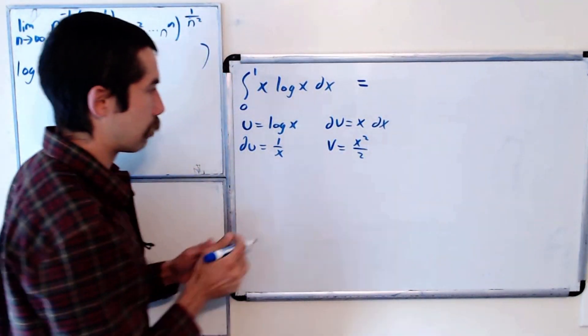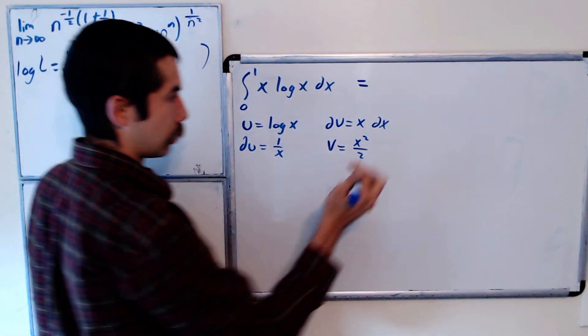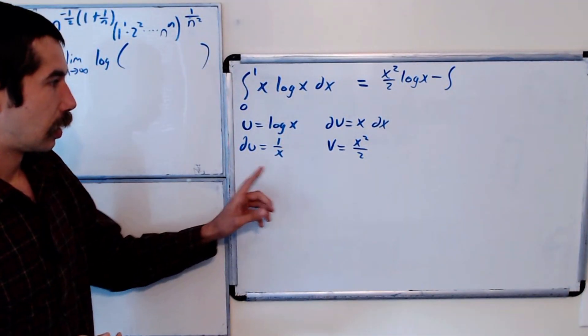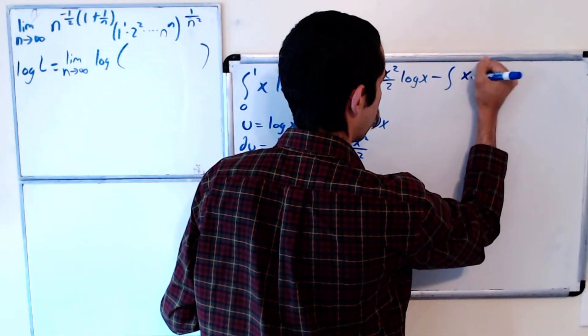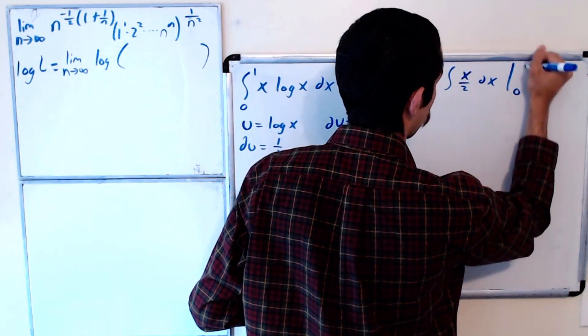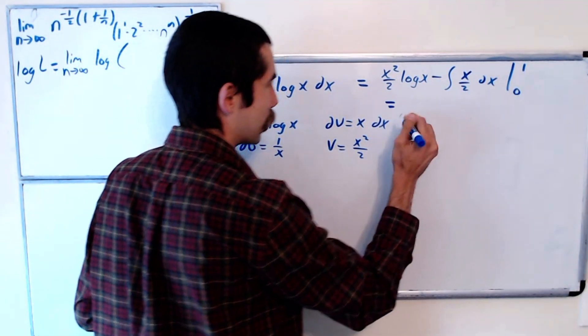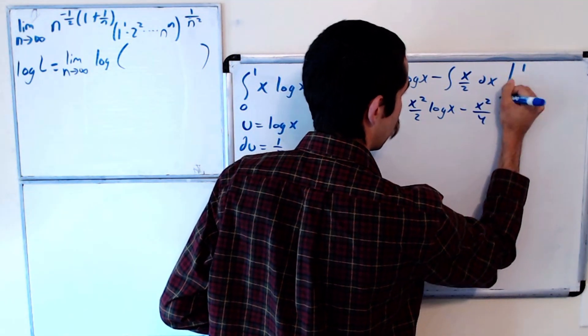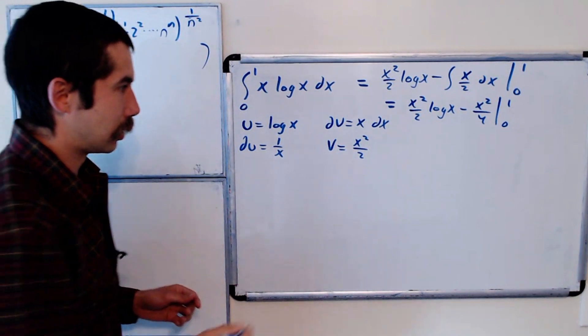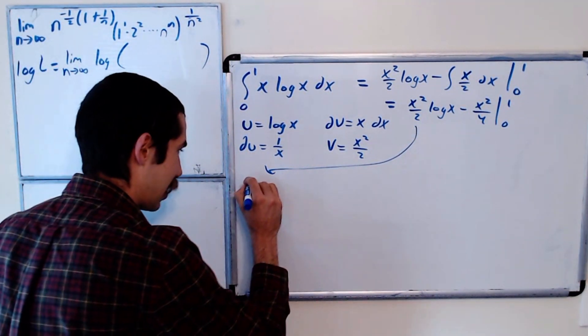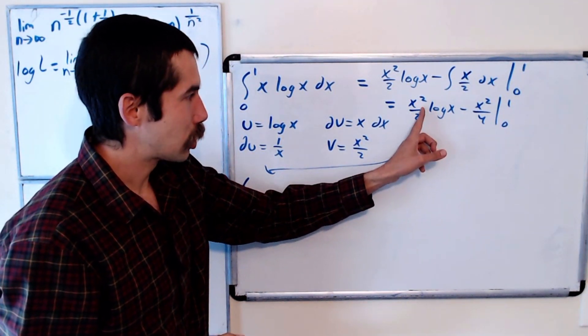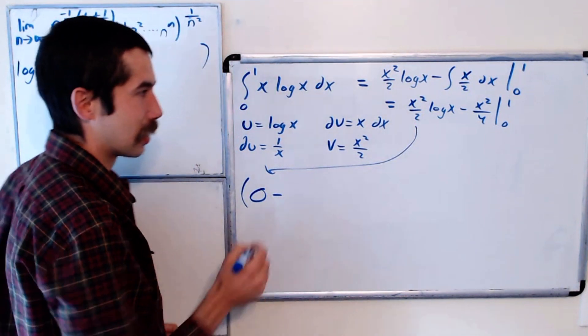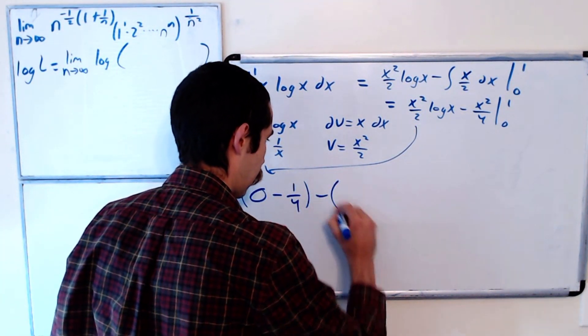Okay, so this integral is equal to uv minus the integral of v du. So that's x squared over 2 times log x minus the integral of x squared over 2 times 1 over x dx. And this is all going to be evaluated at 0 and 1. And so this is equal to x squared over 2 log x minus x squared over 4 evaluated at 0 and 1. Okay, and when we plug in 1, what do we get? 1 squared over 2, which is 1 half, times log of 1—this term goes to 0—minus, we plug in 1, we get 1 fourth.